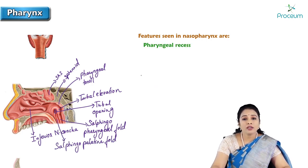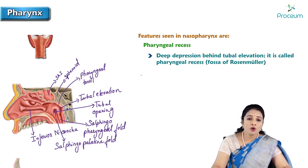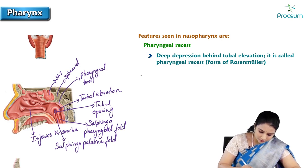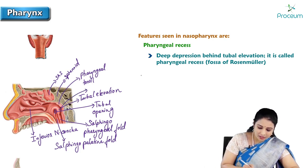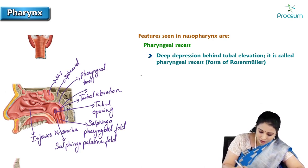Next is the pharyngeal recess. It is a deep depression behind the tubal elevation, and is called the pharyngeal recess or fossa of Rosenmüller. Posterior to the tubal elevation, the deep groove or depression appreciated here is the fossa of Rosenmüller.